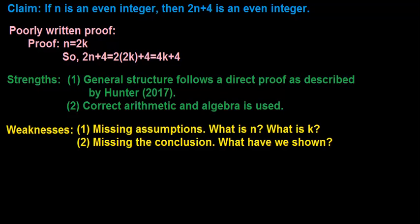There are also several weaknesses. For example, the proof is missing the assumptions. What is n? What is k? What is it that we are trying to do? Secondly, it is missing the conclusion. What have we shown? What does 4k plus 4 really mean?